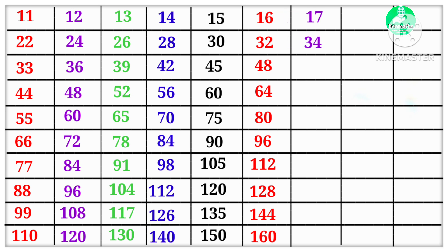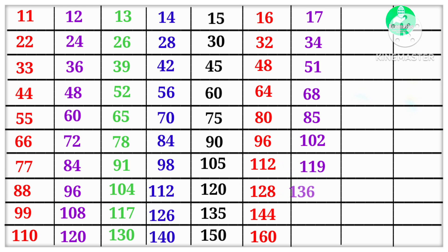17 1s are 17, 17 2s are 34, 17 3s are 51, 17 4s are 68, 17 5s are 85, 17 6s are 102, 17 7s are 119, 17 8s are 136, 17 9s are 153, 17 10s are 170.